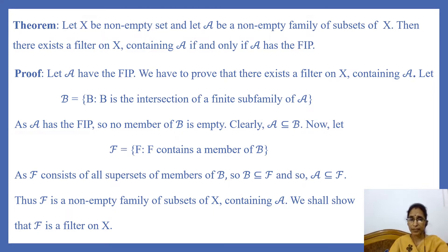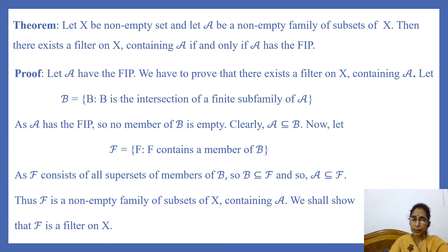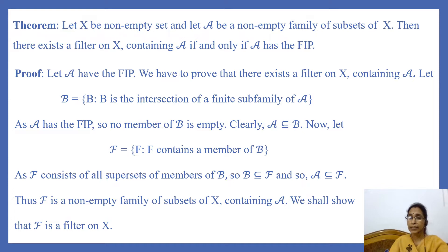Let A have the finite intersection property. Then we have to prove that there exists a filter on X containing A. Let B be the collection of all those subsets of X which are obtained by taking intersection of a finite number of members of A. That is, B is the set containing subsets B where B is the intersection of a finite sub-family of A. As A has the finite intersection property, no member of B is empty, and clearly A is contained in B.